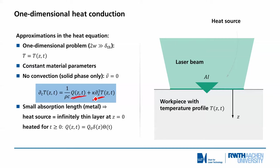Under the assumption of constant material parameters, we can simplify this gradient term for the temperature — this diffusion term. Already here you can see the main characteristic of the simplified heat equation: the first derivative of the temperature to time is proportional to the second derivative of the temperature to space. This already tells us that we will face some difficulties. It would be very nice and easy if it were the second derivative in time proportional to the second derivative in space, but then we would have a wave equation and a sinusoidal solution — which is not the case here. Very important: first derivative in time and second derivative in space are proportional to each other.